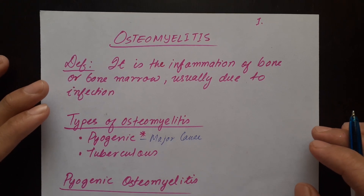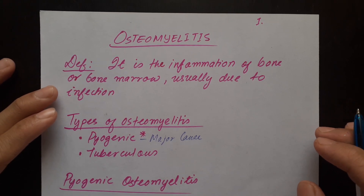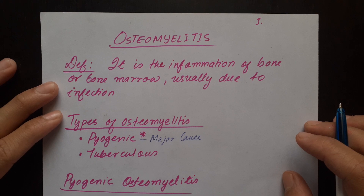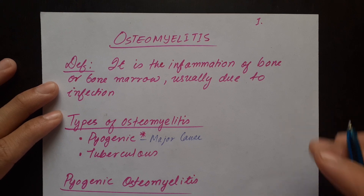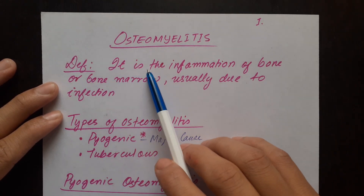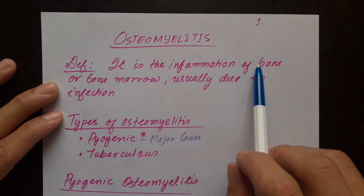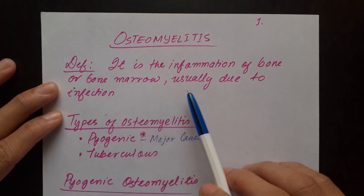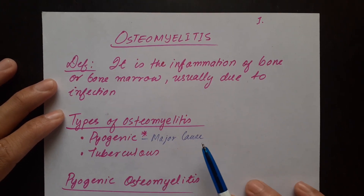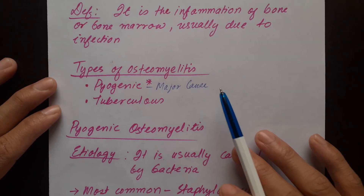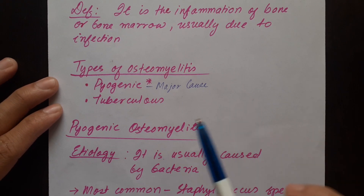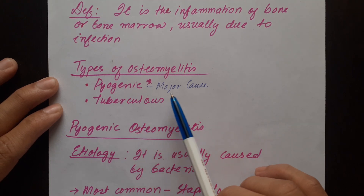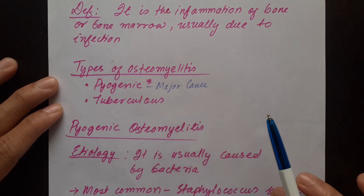Hello everyone, welcome back to my YouTube channel. Today we will be learning about osteomyelitis. Definition: it is the inflammation of bone or bone marrow, usually due to infection. Types of osteomyelitis: pyogenic and tuberculosis, pyogenic being the major cause.